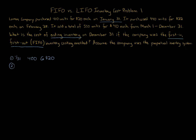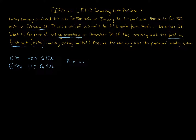In FIFO versus LIFO questions, all inventory is identical — think of it like lumber where prices change but quality doesn't. The next layer is February 28th — Layer 2 — where the company purchased 440 units at $22 each. These are the only two layers. Notice as the dates progress, prices are increasing from $20 to $22.